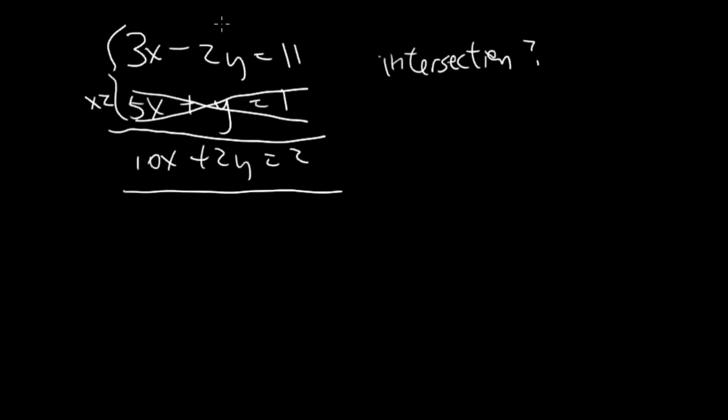Now I'm just going to add these, and here I'm using the elimination method so the y goes away. This becomes 13x equals 13, x equals 1, and we'll just plug one right back in here.